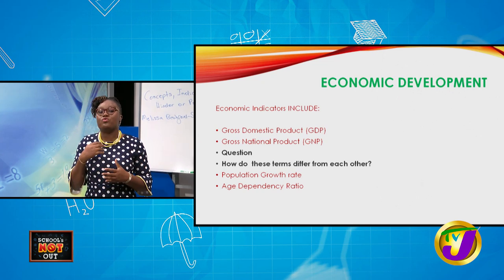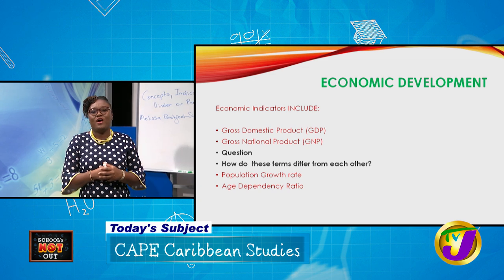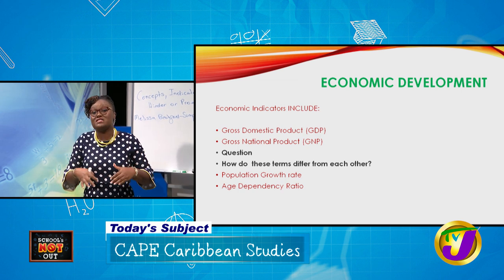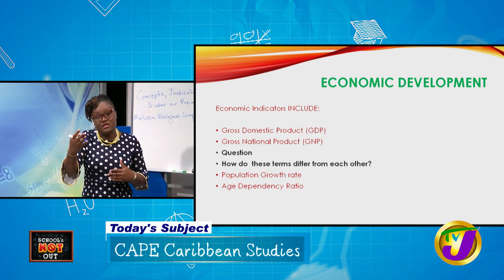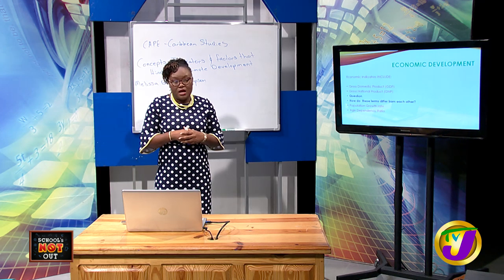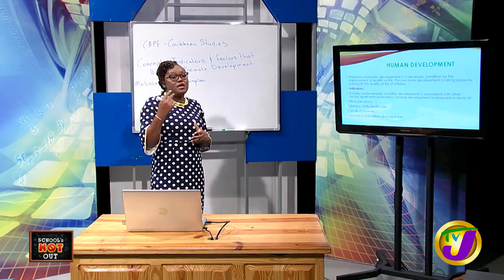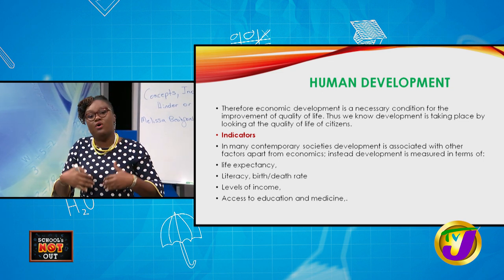Here are some indicators of economic development: we have Gross Domestic Product (GDP) and Gross National Product (GNP) — these are the two major ones. The GDP looks at the total value of goods and services within the country, while the GNP also takes in goods and services that the country exports and other revenues from outside. There are other economic indicators such as population growth rate and age dependency ratios.